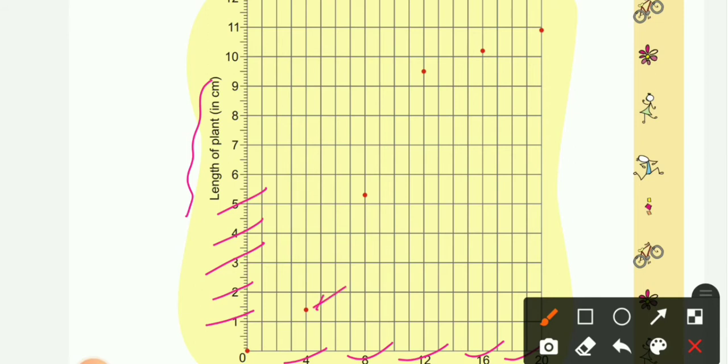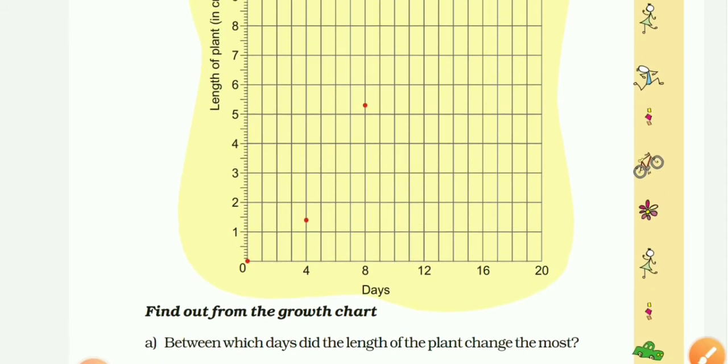Here is the red dot you can see, and when you will measure in scale you will find that it is only 1.4 centimeter. Similarly, next dot is here after 8 days and it was how much? Yeah, 5.3. By taking a scale you can easily find it and many more are here.